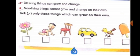Now the second characteristic feature: all living things can grow and change. When you were a baby boy or girl, you could not move much, but slowly and slowly you grew and changed. So all living things can grow and change. But non-living things cannot grow and change on their own — a table or chair does not grow.